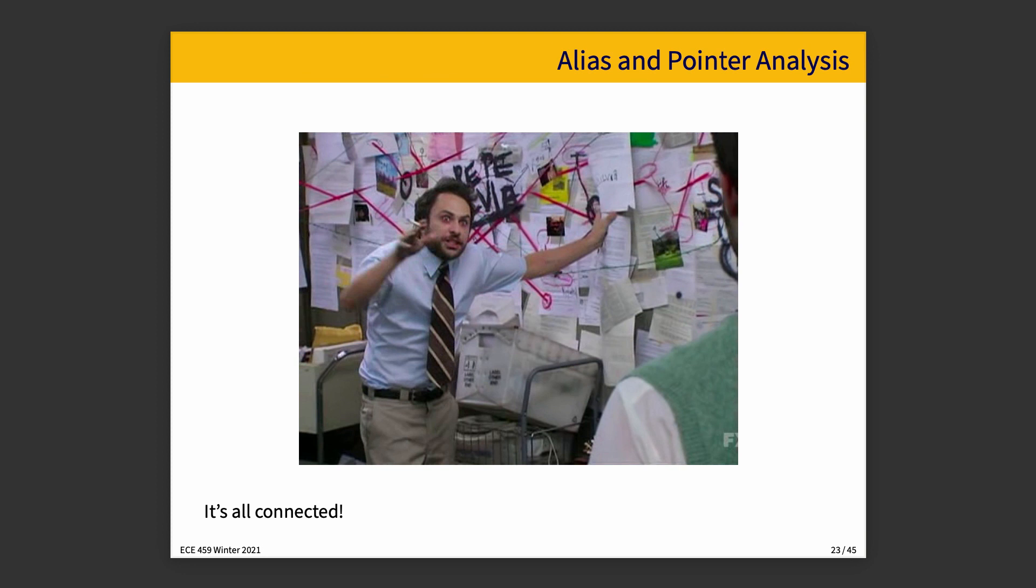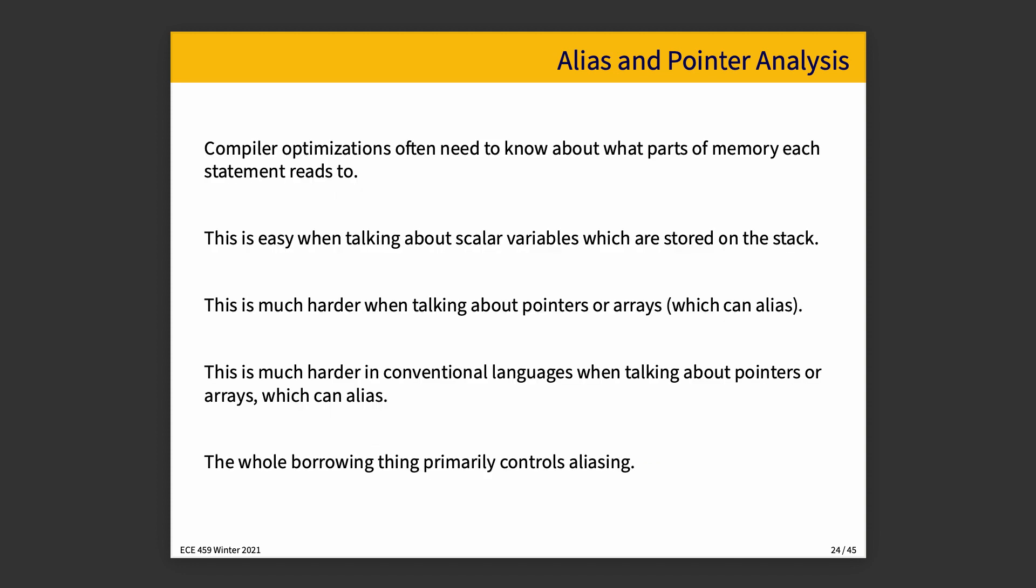And one of the things that we have to consider as the compiler is alias and pointer analysis. And I mentioned earlier that in some cases it could all be connected. But the compiler needs to know about what parts of memory each statement reads from or writes to. And that's somewhat easy when talking about scalar variables which are stored on the stack. You know, X is allocated here, do this, do that.